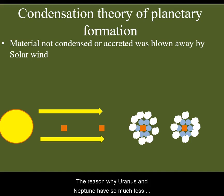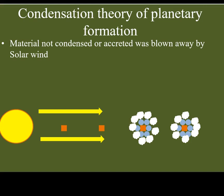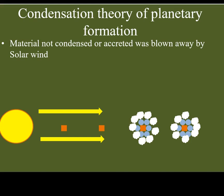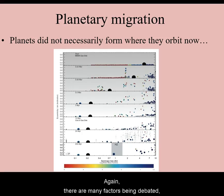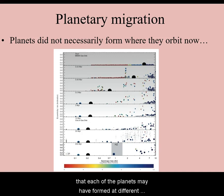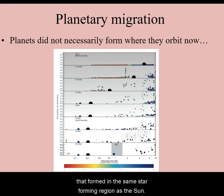The reason why Uranus and Neptune have so much less hydrogen is debated, but many astronomers think it's because their distant orbit from the Sun made them accrete their cores a lot slower, and by the time they got big enough, most of the hydrogen was blown away by the newly formed Sun. There are many factors being debated, including the possibility that each of the planets may have formed at different distances from the Sun than where we observe them now, as well as considerations of stellar winds from other stars that formed in the same star-forming region as the Sun.